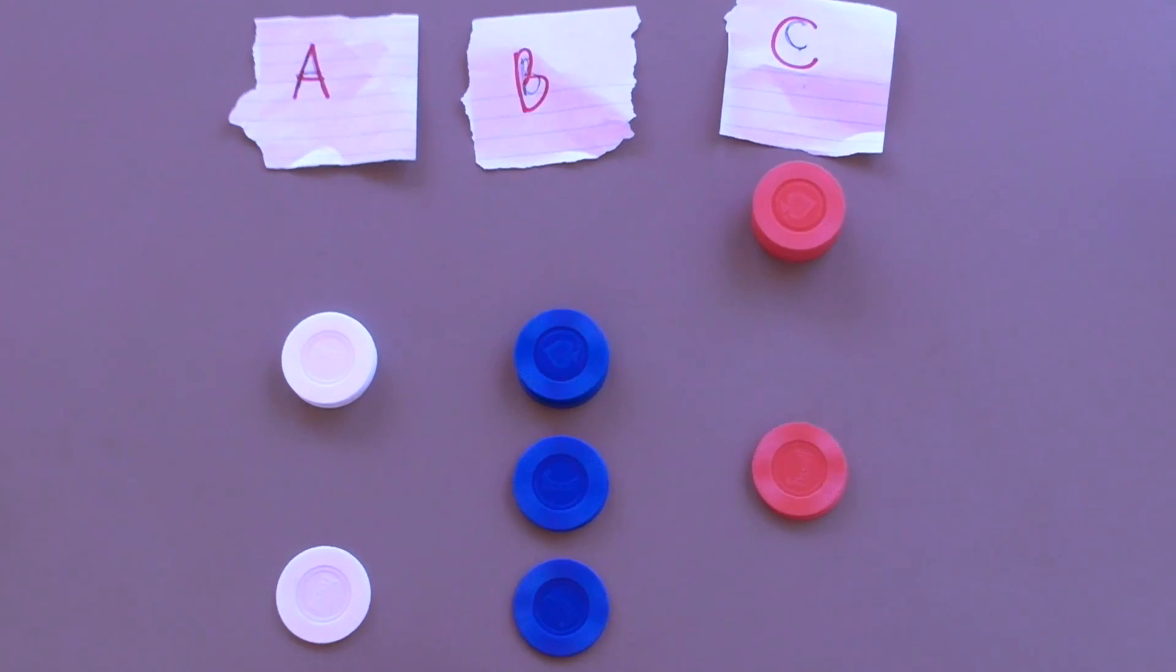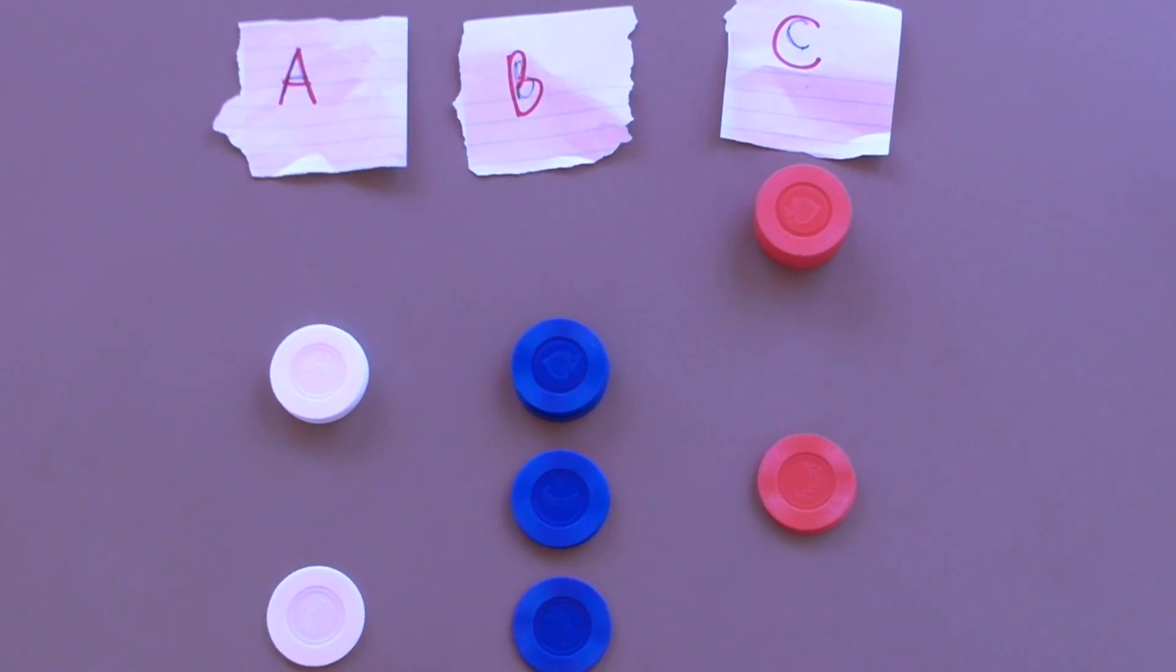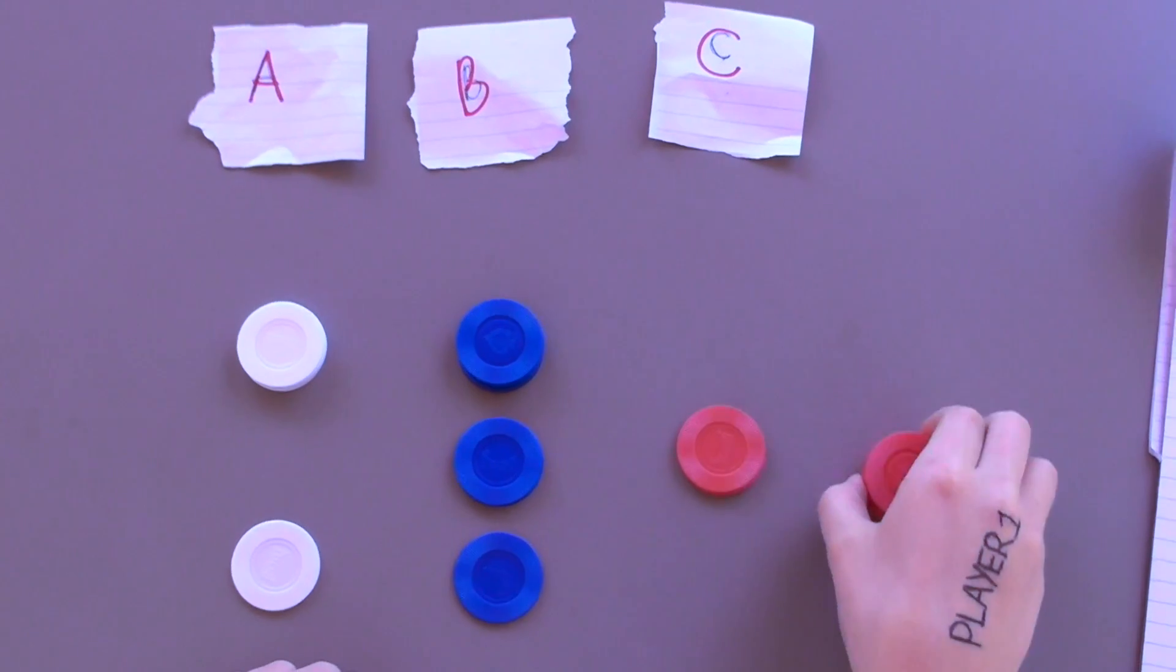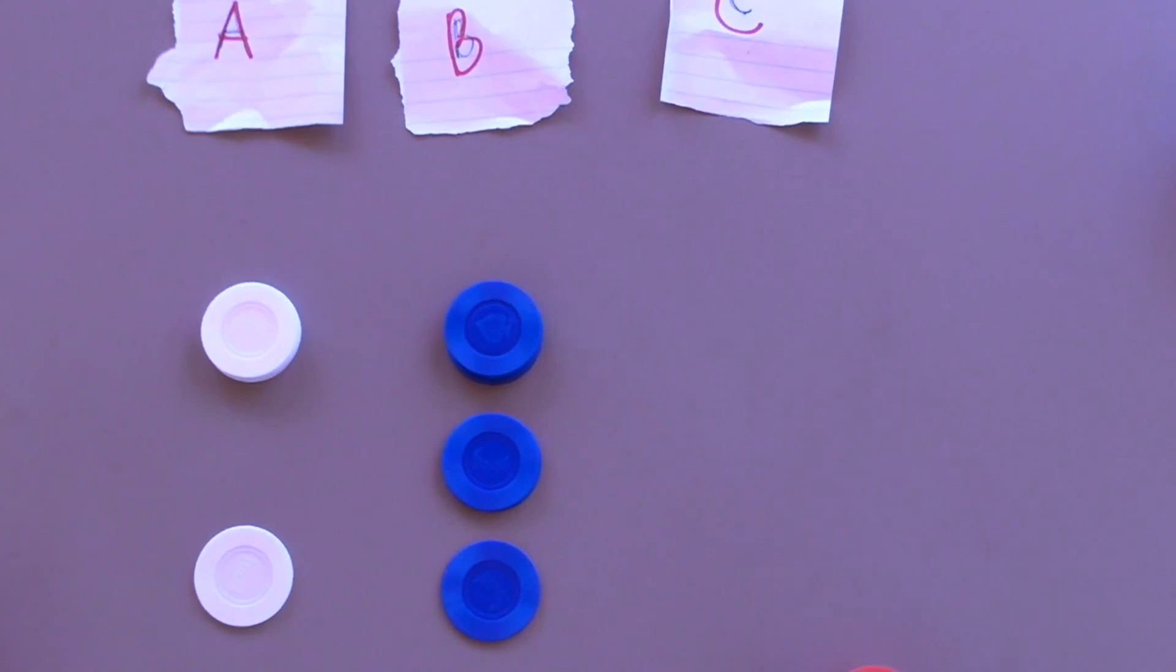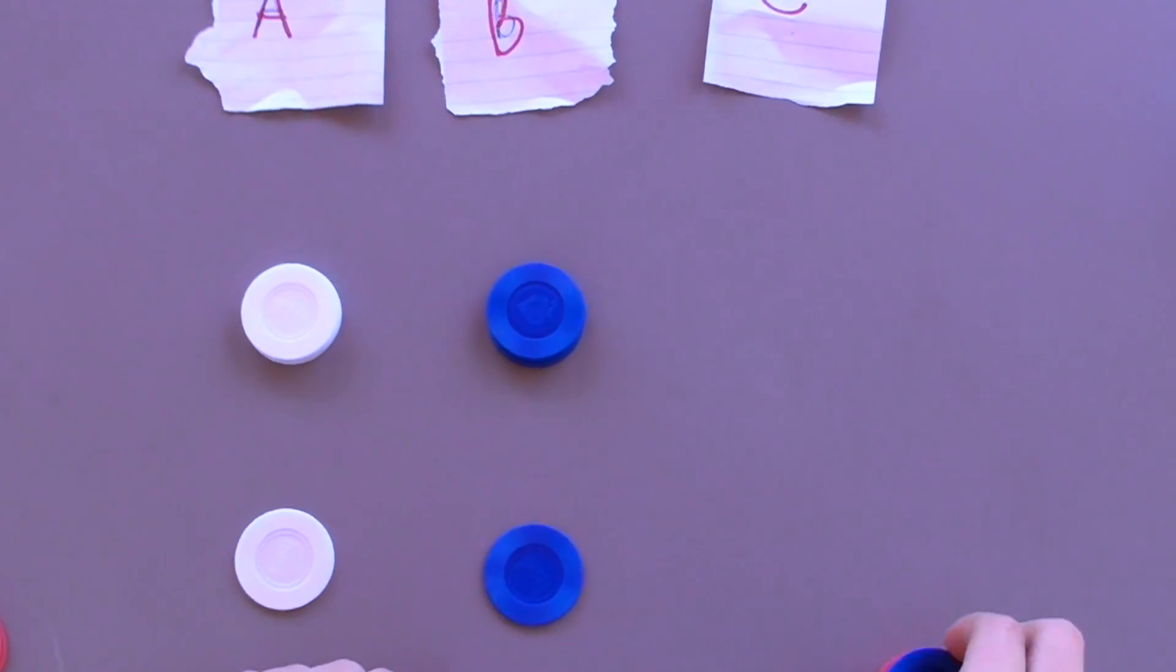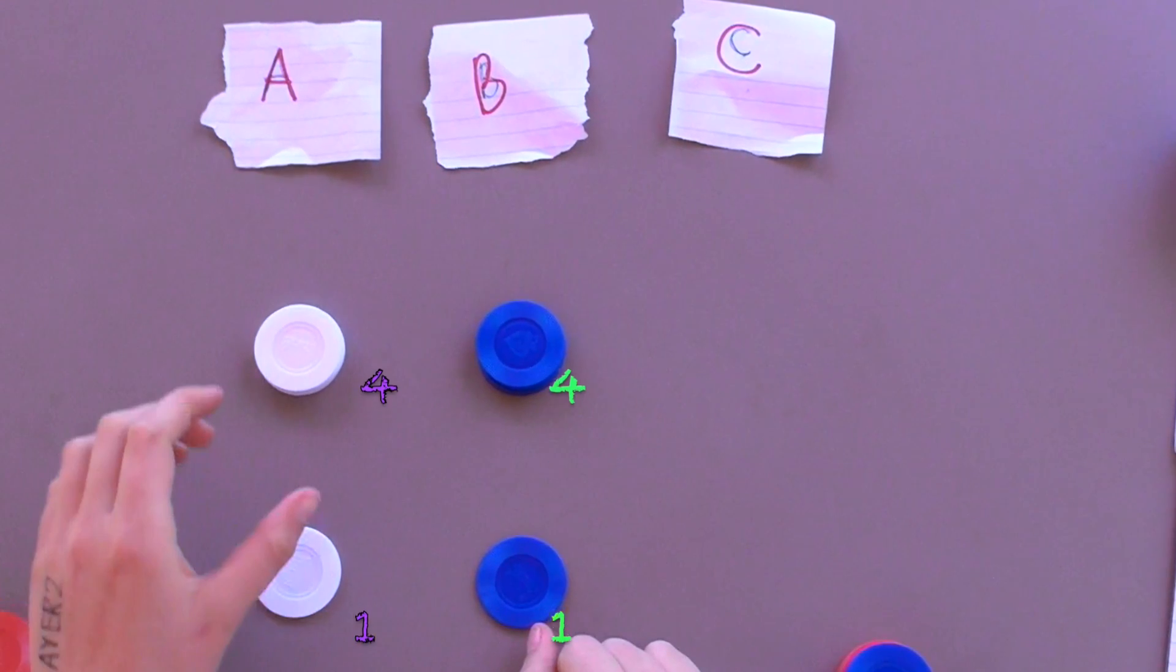As player 1, I look for ways to make the board balanced. In this case, I start by taking 8 from pile C. Then the other player takes from pile C, and I will take 2 from pile B to make the board balanced.